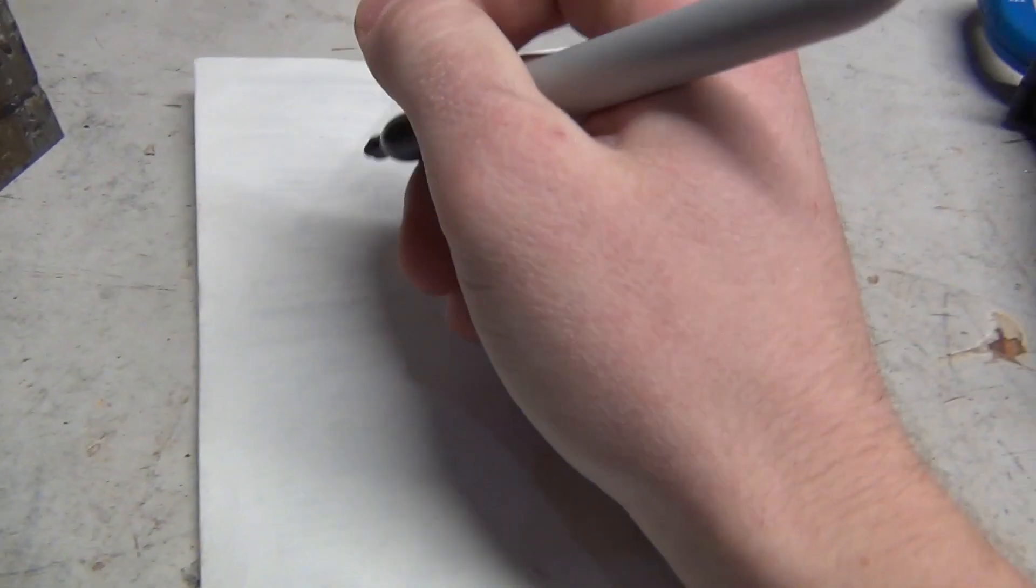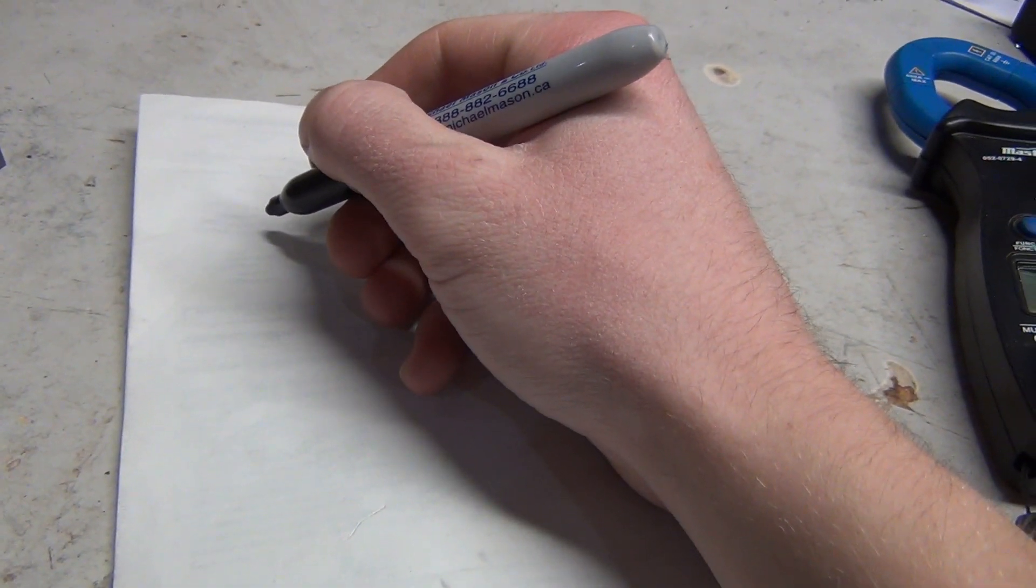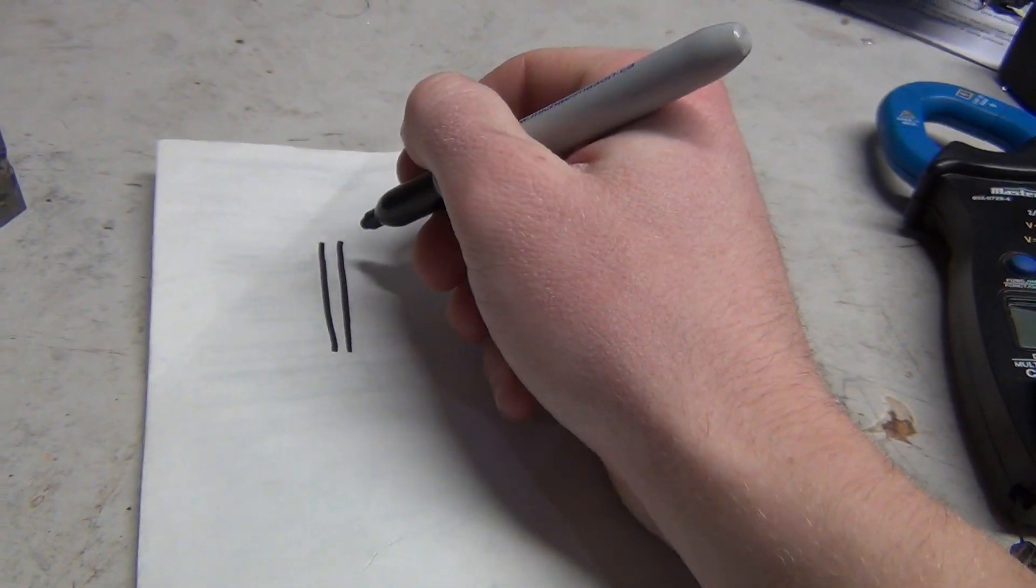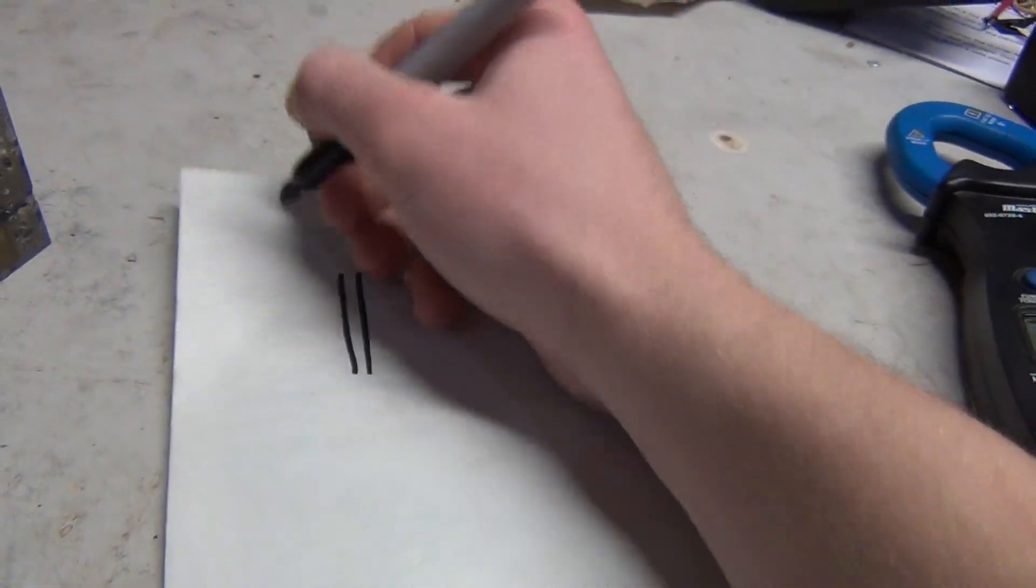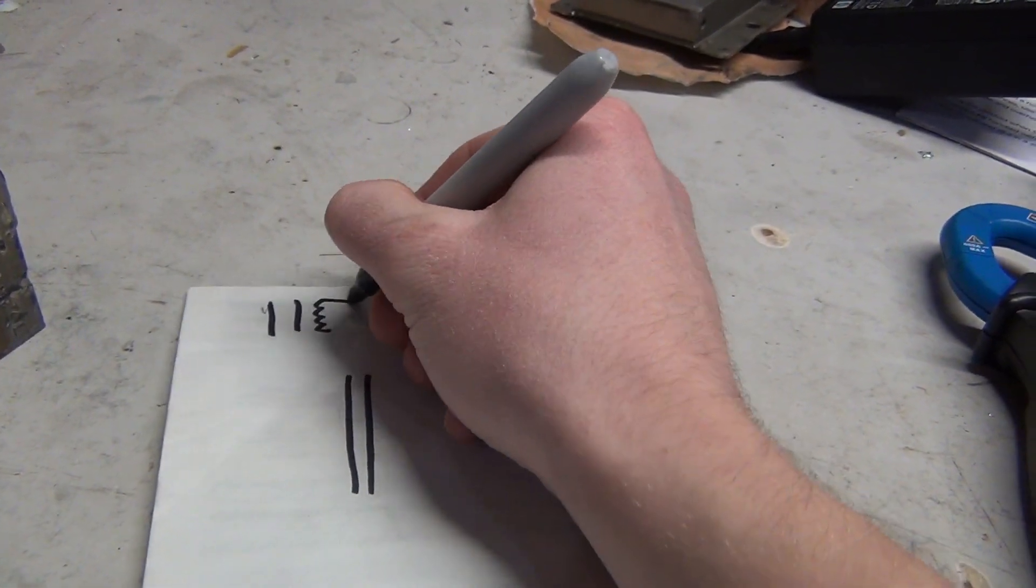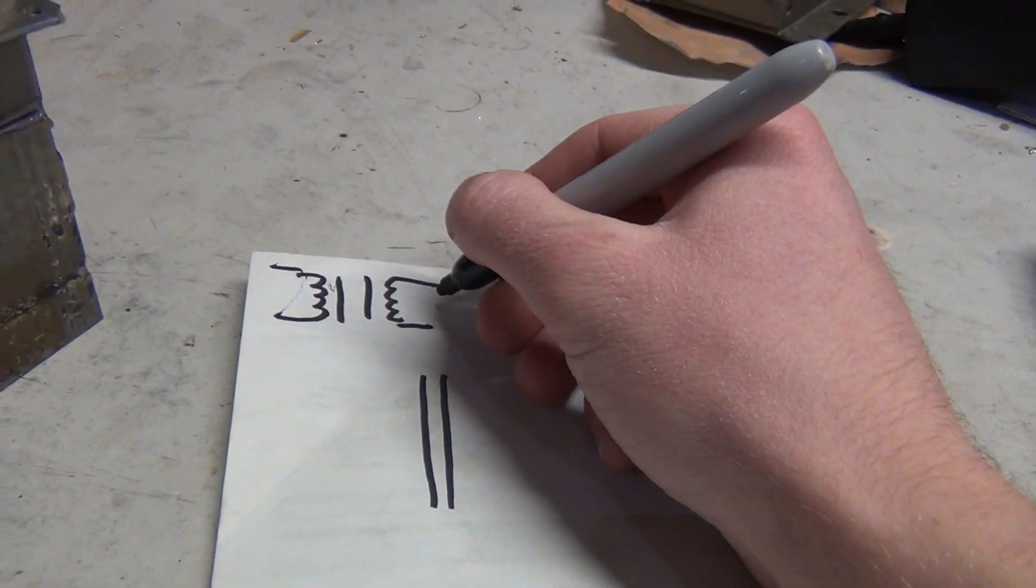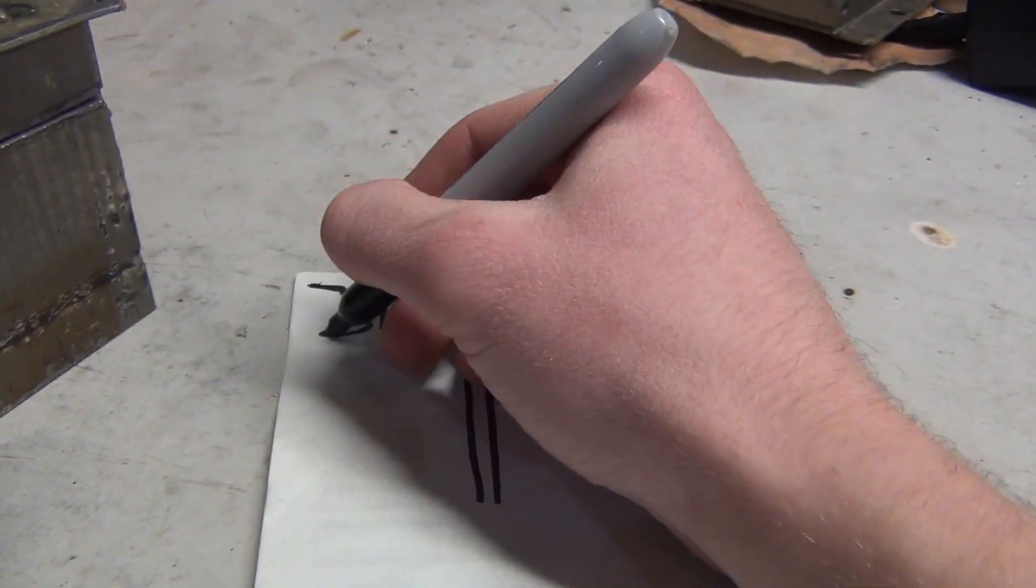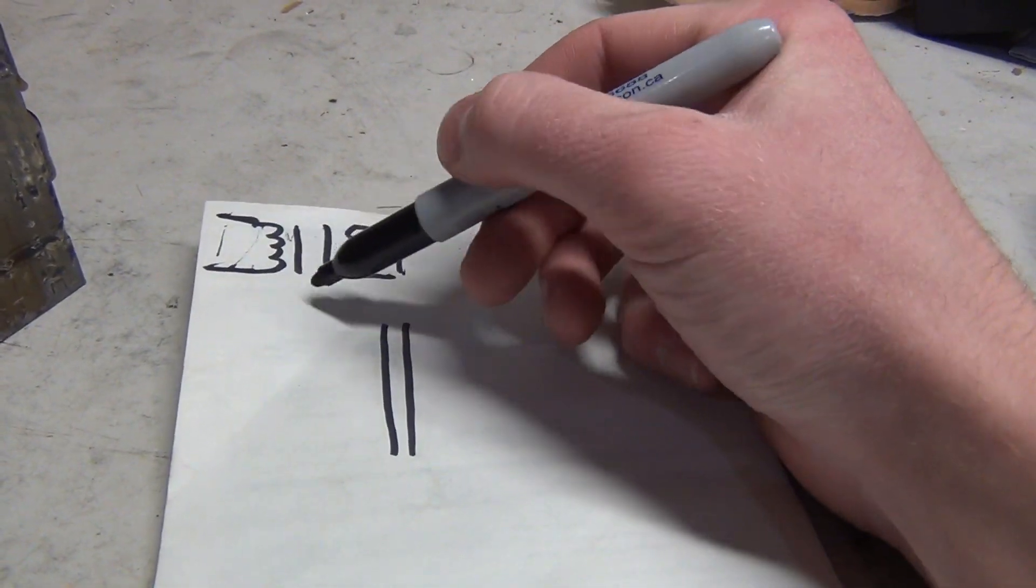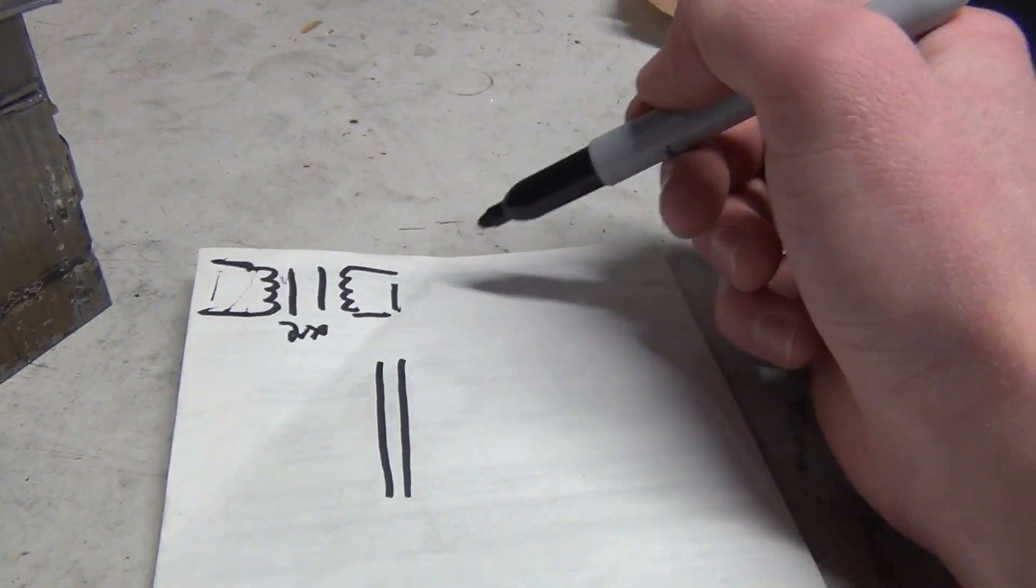What we got is an iron core. Most transformers work like this, right? You got your load here and your 120 here. There's a ratio, say like 2x - you'll get 120 here, 240 here.